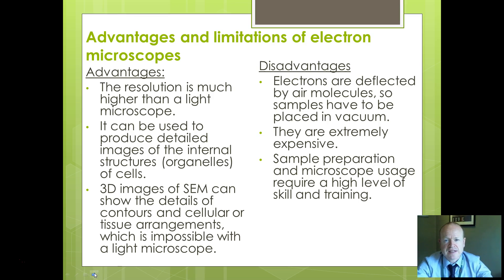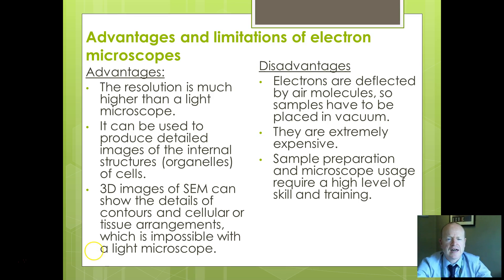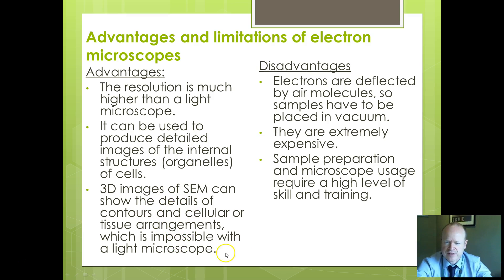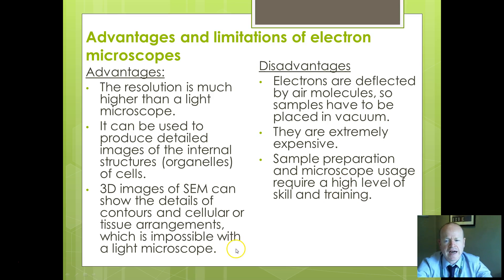Consider the advantages and limitations of electron microscopes. Advantages: higher resolution, more detailed images, better detail of organelles, and 3D imaging available with the SEM. Disadvantages: specimens must be in a vacuum, the equipment is expensive compared to light microscopes, and operators must be highly trained.